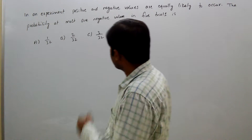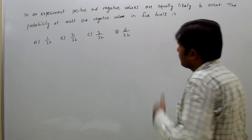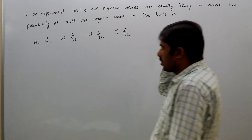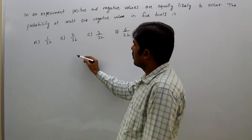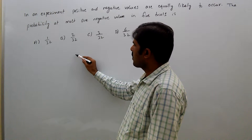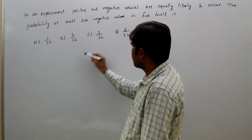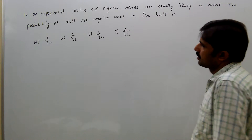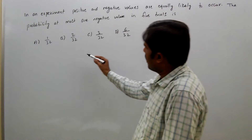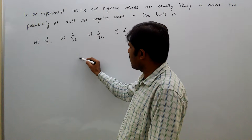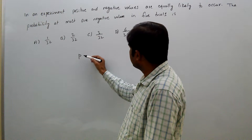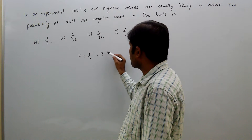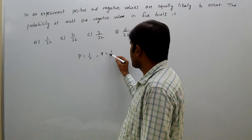Here, total experiments are five. At most one negative means zero negatives and one negative — that is the meaning of at most. Out of five trials, getting a negative probability is 1 by 2, and getting a positive probability is also 1 by 2.